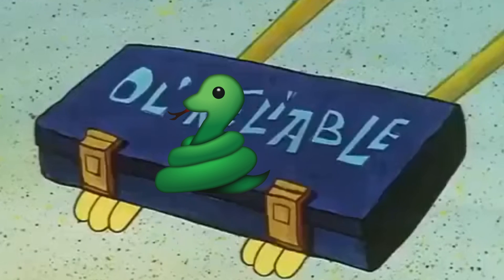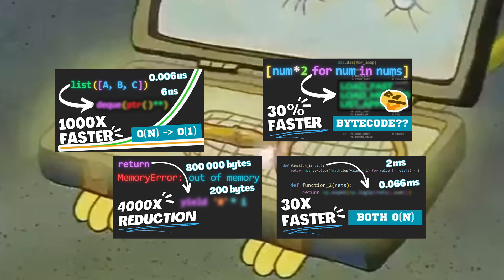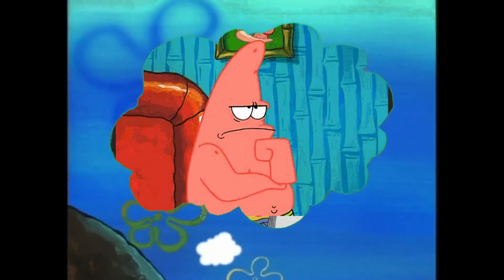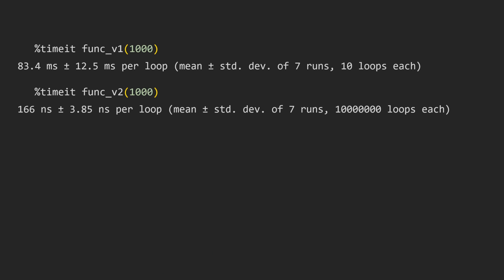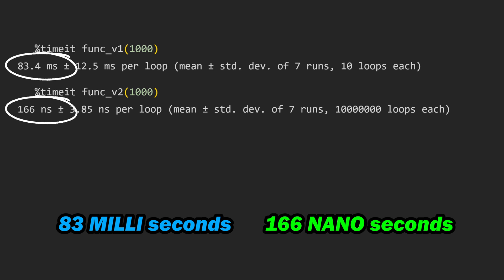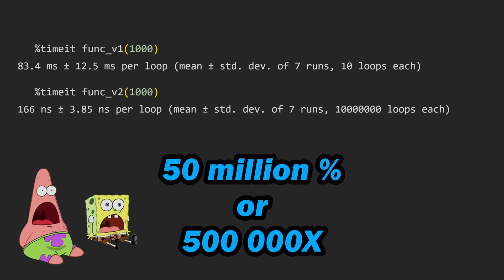It's time for another Python optimization video, meaning it's time to have you guessing if you've been using Python incorrectly your entire life. Let's start with two functions that serve the exact same purpose. We can see that function 1 runs in 83 milliseconds, while function 2 runs in 166 nanoseconds — that's a 500,000 times speed increase. Let's see what's going on behind the scenes.